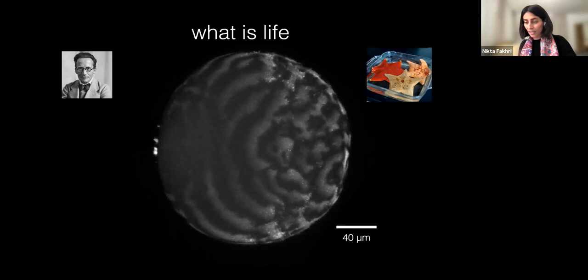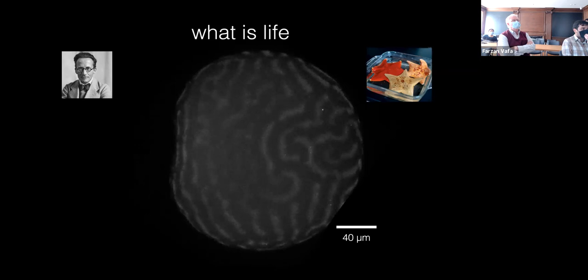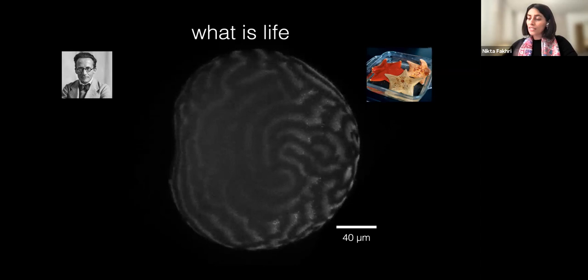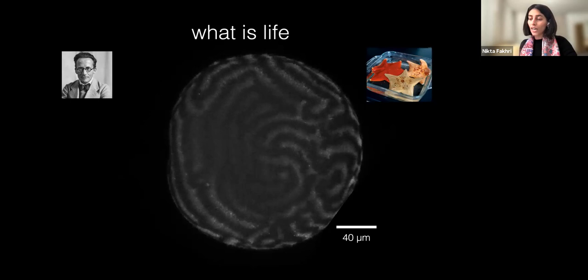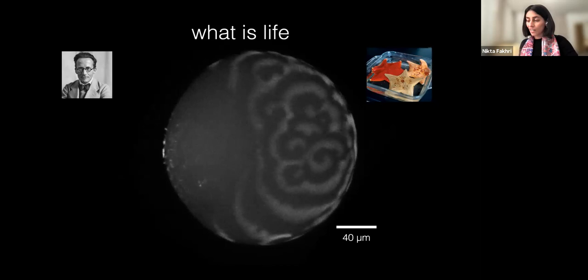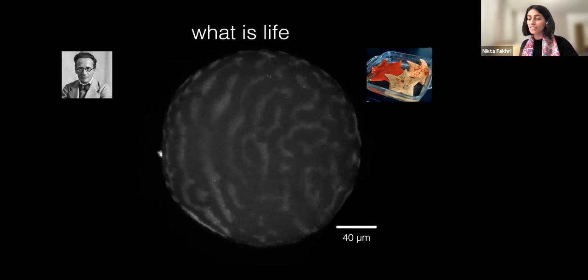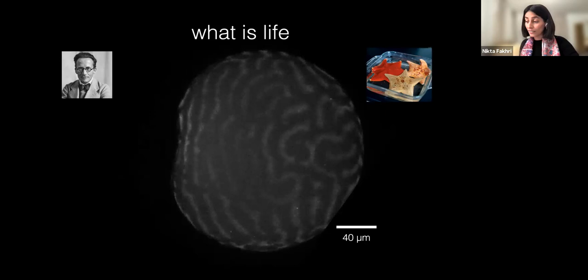Being alive is a macroscopic state, while things like DNA and proteins are the components of the microscopic mechanisms by which this state is generated and maintained. Let me elaborate on this by talking about this video: this is an X cell or oocyte of a sea star. It's a model system we use in my group — a very large cell, about 200 microns in diameter. What you see are self-organized patterns of signaling proteins that allow the cell to perform cell division early in development.